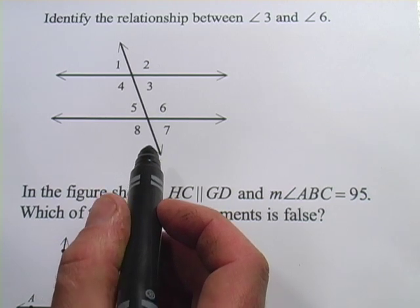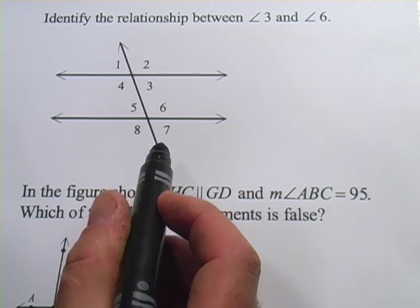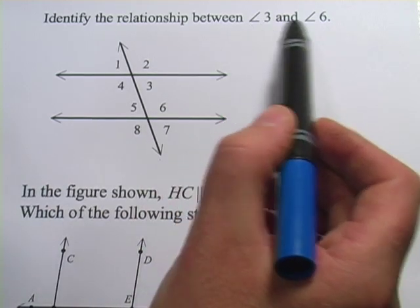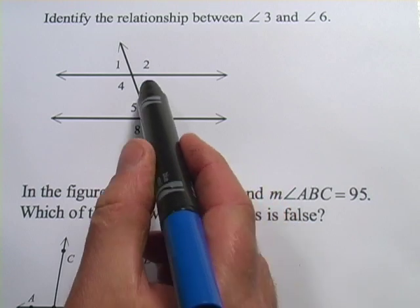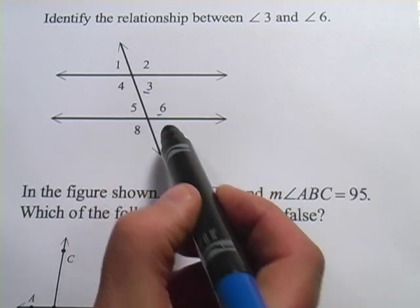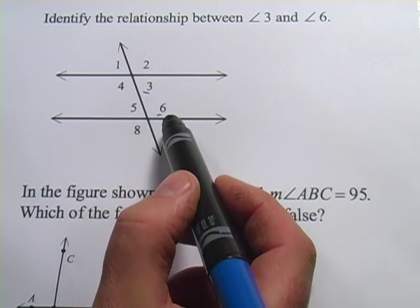All right, let's take a look at the first question here. It says, identify the relationship between angle three and angle six. So angle three and angle six, and actually we already mentioned this, they're interior. They're right next to each other. So they're consecutive interior angles.